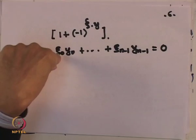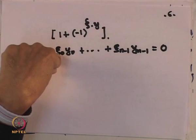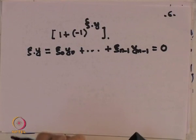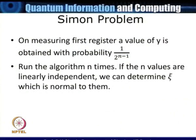This means the measured string y and the unknown string ξ are perpendicular (their inner product mod 2 is zero). If we run the algorithm n times and get n linearly independent y values, we can determine ξ — and crucially this requires only n runs (the number of qubits), not 2^{n/2} as classically required.